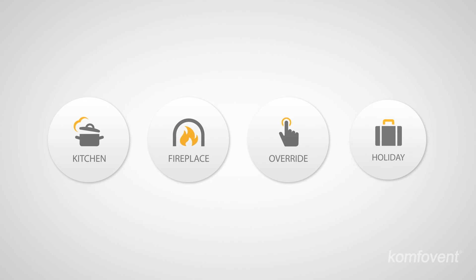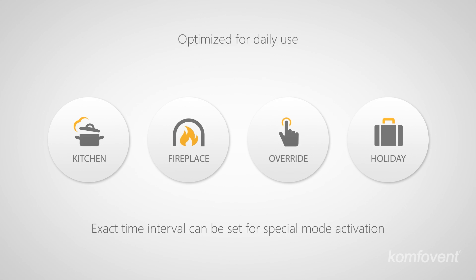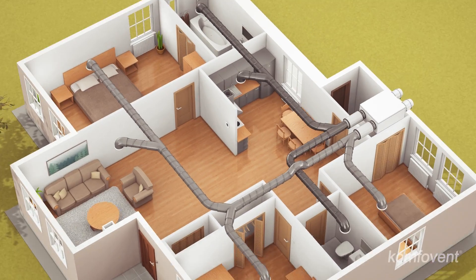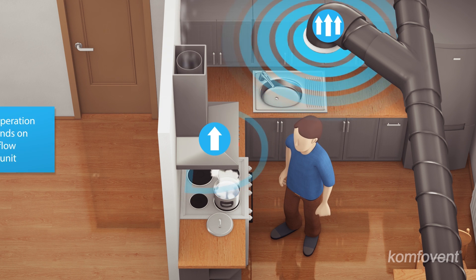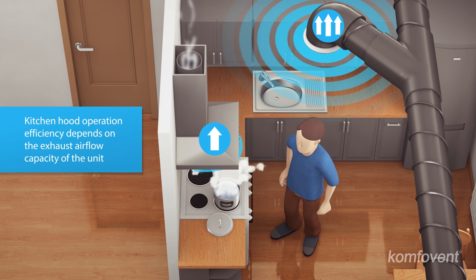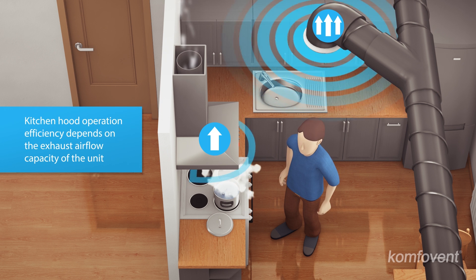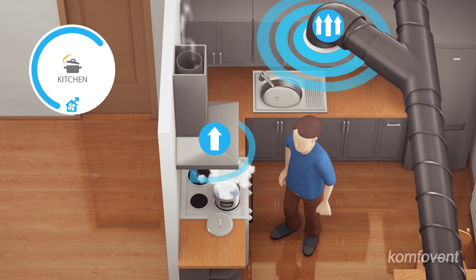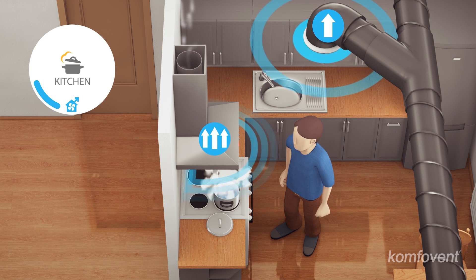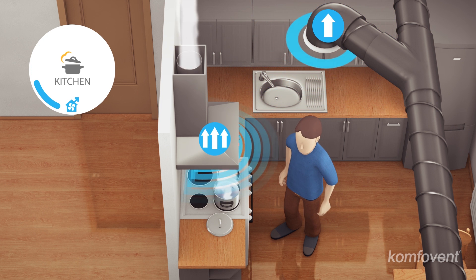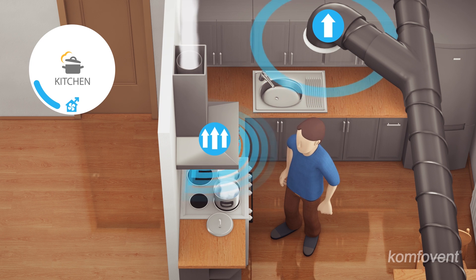Special ventilation modes allow you to save energy and ensure comfort in various daily situations. When you turn on the kitchen hood, it removes a large amount of air. Therefore, the pressure difference created between indoors and outdoors reduces the hood's performance and results in worse removal of odors and combustion products. Smart control allows you to select a special mode that reduces the air volume exhausted by the air handling unit, so the hood can operate effectively.